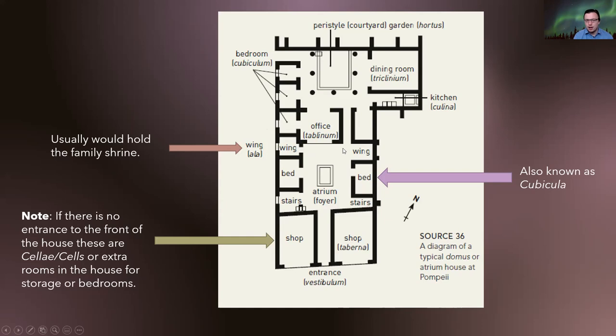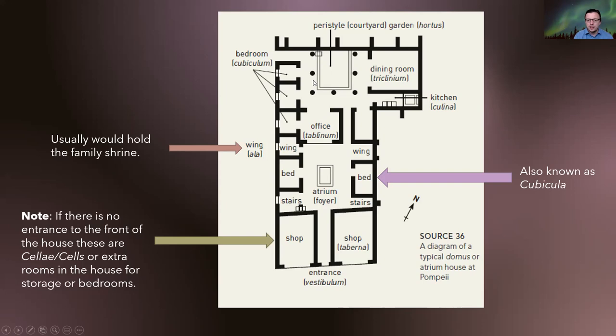Going through the atrium, kicking off from the alae, is the tablinum — basically the office of the head of the household, where their records would be kept. Normally you have to go through the tablinum to reach the peristyle — the backyard courtyard garden area. Those little dots in the diagram represent columns, which are part of that creeping Hellenic influence. Keep in mind we use the term Hellenic, not Greek, in ancient history examinations, because this whole idea of a Greek identity has not really happened yet.